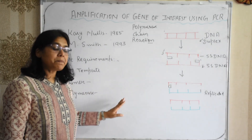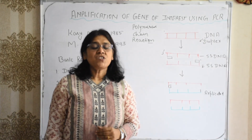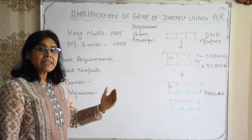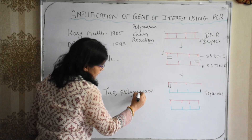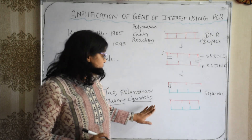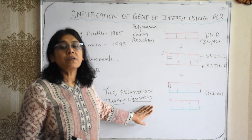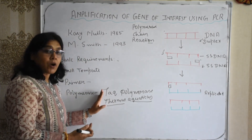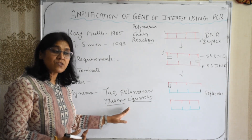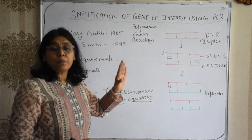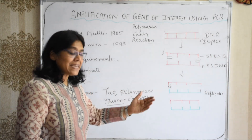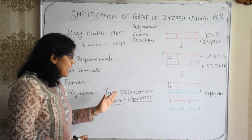The third basic requirement for the PCR technique is polymerase enzyme. It helps in the synthesis of a new DNA strand. The most commonly used polymerase enzyme is Taq polymerase, obtained from Thermus aquaticus, which is a thermophilic bacteria. Taq polymerase is preferred because it can withstand high temperatures, preventing the enzyme from being denatured during the heating step.